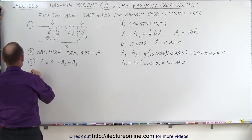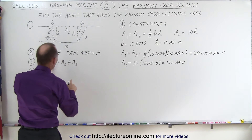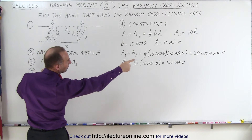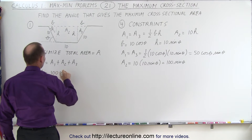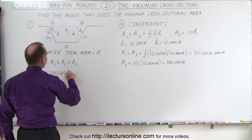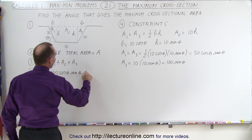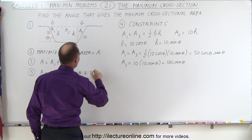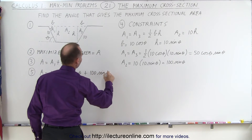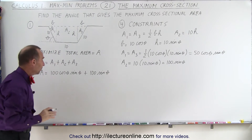That brings us to step five. The total area A, which we're trying to maximize, equals A1 plus A3 plus A2: that is 100 cosine theta sine theta plus 100 sine theta.